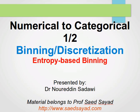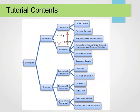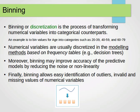In the next video, we'll cover the other paradigm and take two examples. Now, before we continue, let's remind ourselves of where we are — we're still here converting or transforming numerical variables into categorical variables. Binning or discretization is the process of transforming numerical variables into categorical counterparts. An example is to bin values for age into groups such as 20–39, 40–59, and so on.